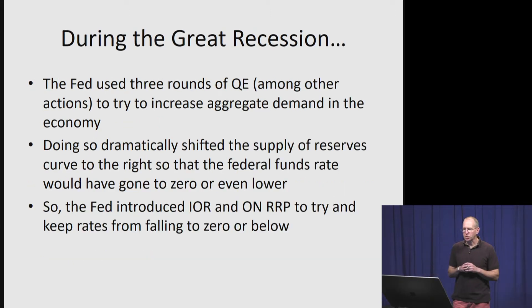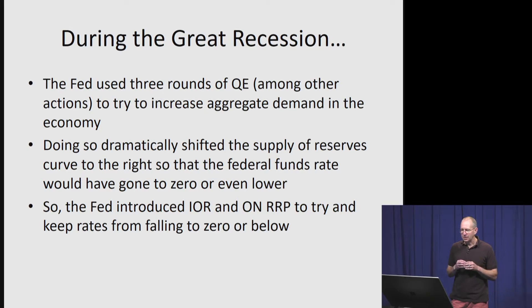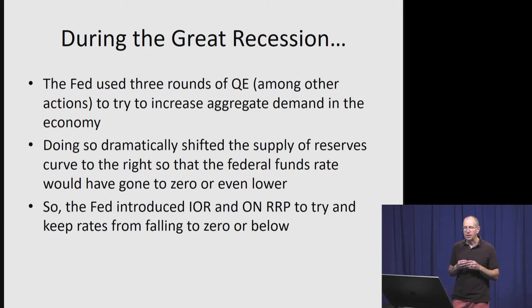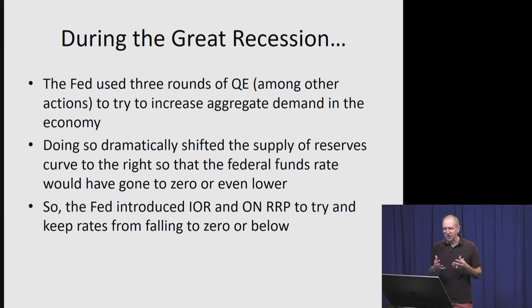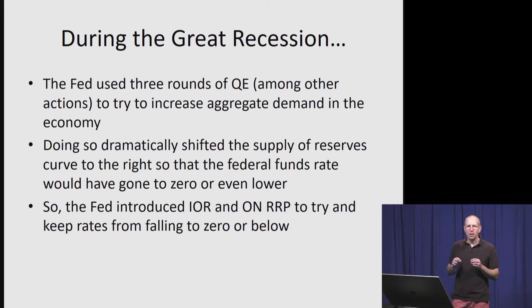During the Great Recession, the Fed used three rounds of quantitative easing, which we have addressed in other videos. What they were trying to do was increase aggregate demand in the economy. When they went through their three rounds of QE programs, they dramatically shifted the supply of reserves curve very far to the right. This would have caused the federal funds rate to be pushed down to zero or possibly even below. In our previous video, we looked at how the Fed introduced the IOR and ONRP rate to prevent this problem.